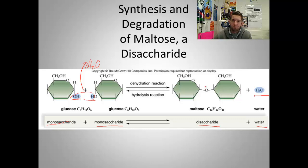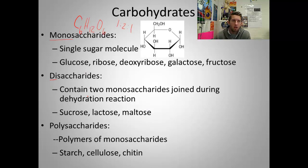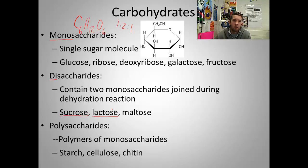The reverse can also happen — this disaccharide can be broken apart to form two monosaccharides. That's a process called hydrolysis. What happens is that this bond gets bombarded by a water molecule, breaks it up, and we get two monosaccharides. Disaccharide examples: that was maltose — two glucoses put together. You put a glucose and a galactose together, you make lactose. You put a glucose and a fructose together, you make sucrose — which you may recognize as table sugar. Lactose is a sugar in dairy products, so if you don't have the enzyme lactase, you're lactose intolerant and you can't break this sugar down.